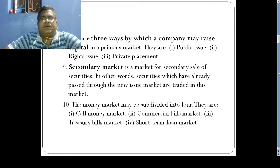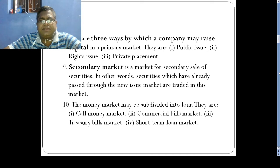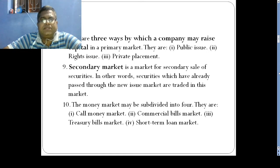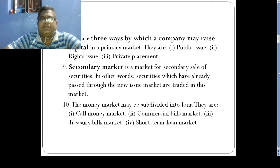Regarding how a company can raise capital, there are generally three forms: one is Public Issue, called IPO — Initial Public Offerings; another is Rights Issue; and another is Private Placement. Some other issues also exist.